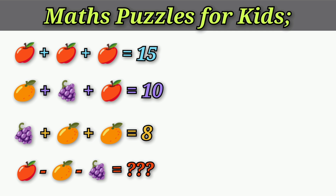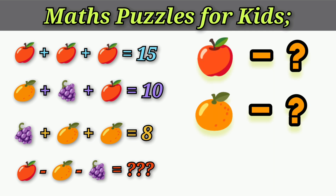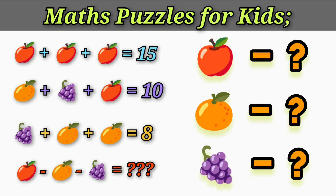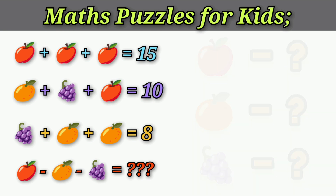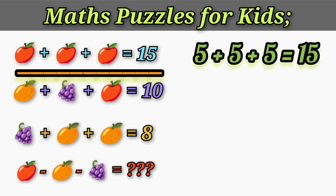First, identify one apple, one orange, and one grapes — how many rupees each? Then easily solve this problem. First puzzle: apple plus apple plus apple equals 15, so 5 plus 5 plus 5 equals 15. One apple rate is 5 rupees — confirmed.